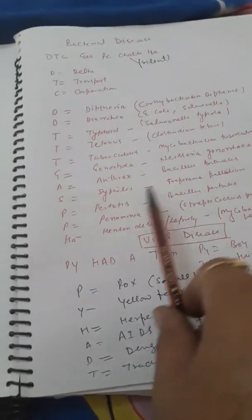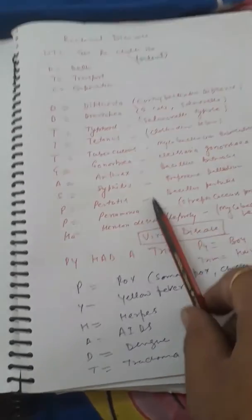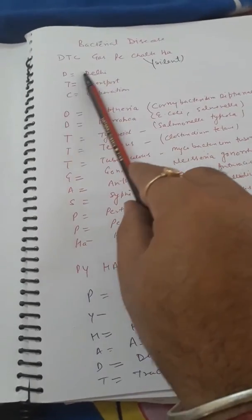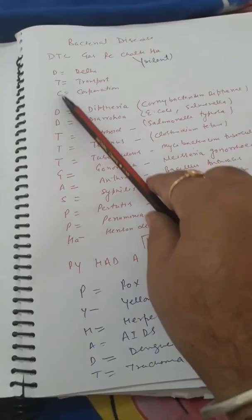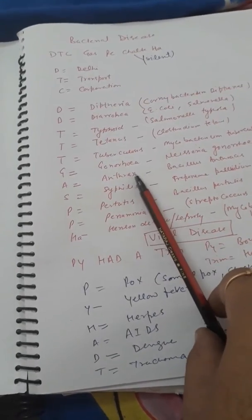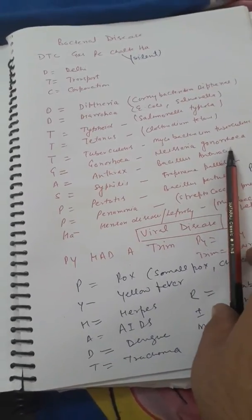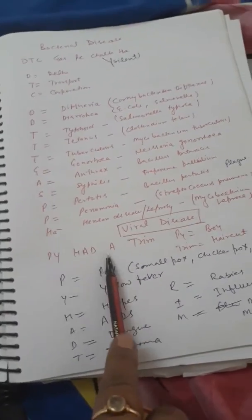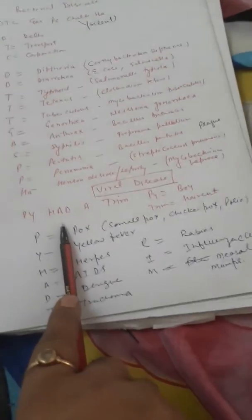Thik hai, so these are all the bacterial diseases. Aapko yahan se pata lagana chahiye DTC se. Yahan se aap iski abbreviation bana sakte hai. DTC ki abbreviation gas pe chalta hai. Isse aapka saare ye clear ho jayengi. Iske baad aa jata hai aapka viral disease.